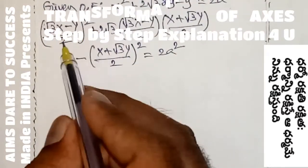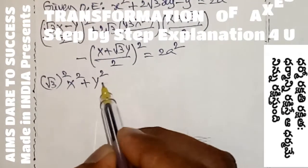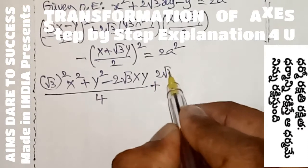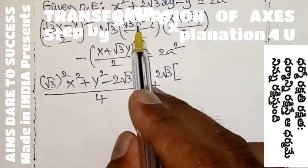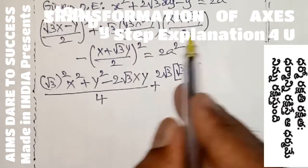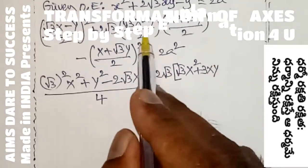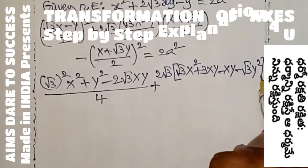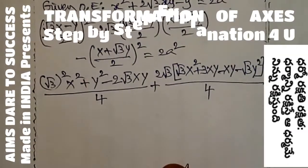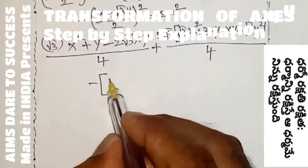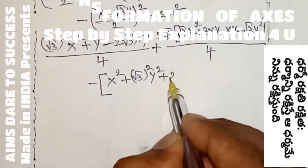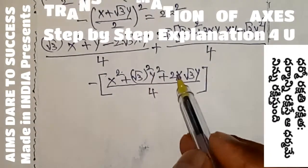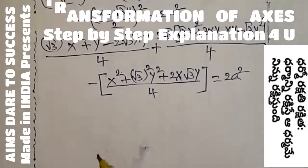Expanding using (a−b)² formula: (√3)²·X² + Y² − 2·√3·X·Y, all divided by 4. Plus 2√3 · (√3X − Y)(X + √3Y) / 4. Minus (X + √3Y)² / 4 = 2a². Using (a+b)² = a² + b² + 2ab, expand all terms. All three terms have denominator 4, so take LCM = 4.